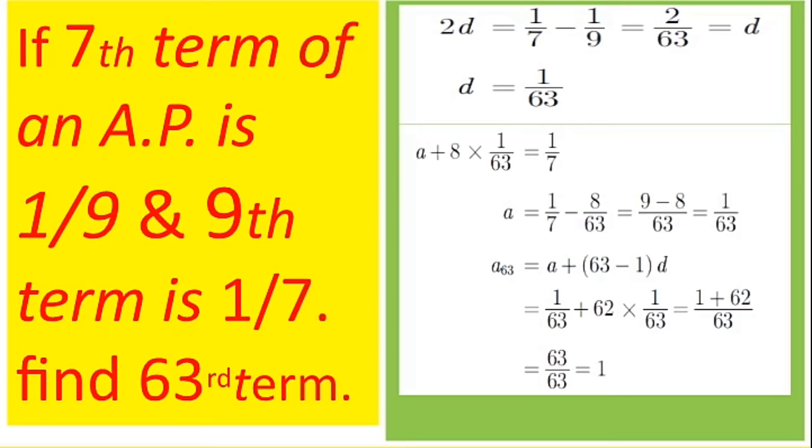So they are asking for the 63rd term. The 63rd term is A plus 62D. A is 1 by 63, D is also 1 by 63. So A plus 63 plus 62 into 1 by 63. Once you solve this, you will get the final answer is 1.